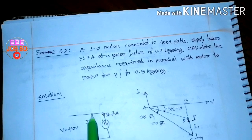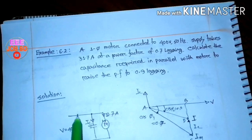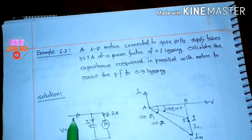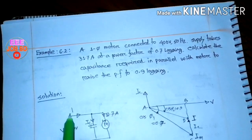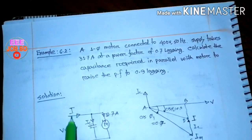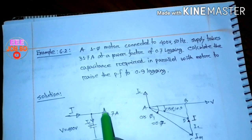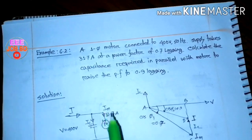The capacitor current is IC. The motor current is I motor.